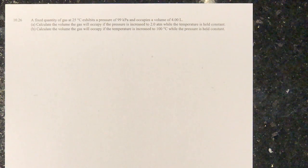Today we're solving assignment 10.26. A fixed quantity of gas at 25 degrees Celsius exerts a pressure of 99 kilopascals and occupies a volume of 4 liters. Part A, calculate the volume the gas will occupy if the pressure is increased to 2 ATMs while the temperature is held constant.